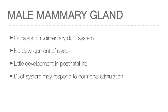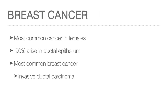Male and female mammary glands develop similarly from birth to puberty, but the growth of mammary glands in males is inhibited by increasing testosterone levels, which act on the mesenchymal cells of the mammary stroma to induce regression and necrosis. Breast cancer is the most common cancer in females, although it can also occur in males. 90% arise in the ductal epithelium, with invasive ductal carcinoma being the most common breast cancer.